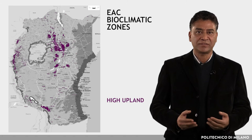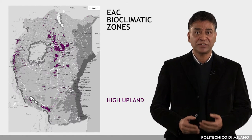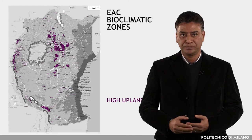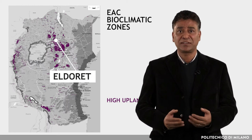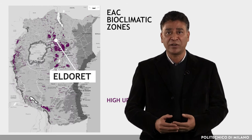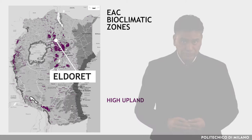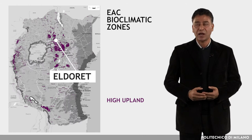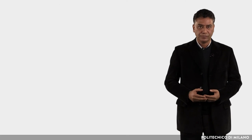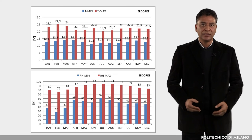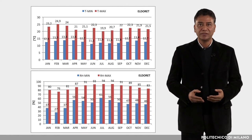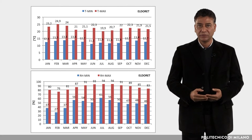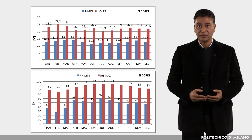The sixth zone is High Upland. The representative location for this climate is Eldoret in Kenya. This zone refers to altitudes above 2000 meters and consists of generally cold areas where heating is necessary for most of the year. The humidity is fairly high.